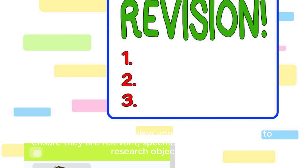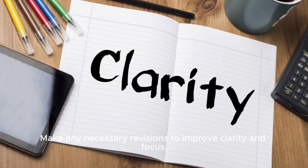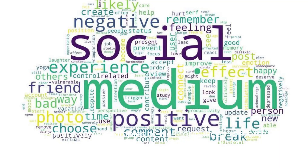Step 7: Revise and refine. Review your research questions to ensure they are relevant, specific, and aligned with your research objectives. Make any necessary revisions to improve clarity and focus. Here are some examples of well-formulated research questions.